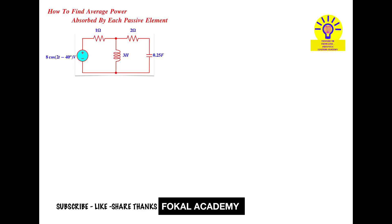Hi everyone, welcome to Focal Academy. In this problem, we'll find the average power absorbed by each passive element without using Laplace transforms. The circuit has one voltage source and four passive elements: two resistors, one inductor, and one capacitor. The voltage source is 8 cos(2t - 40°) volts.